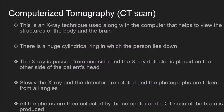Computerized tomography or CT scan is an X-ray technique used along with a computer that helps to view the structure of the body and the brain. The person lies down in a huge cylindrical ring. The X-ray is passed from one side and the X-ray detector is placed on the other side of the patient's head. Slowly, the X-ray and the detector are rotated and photographs are taken from all angles.